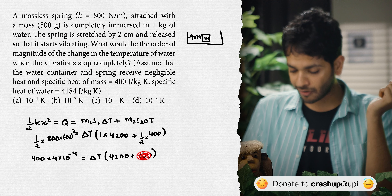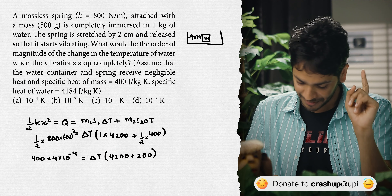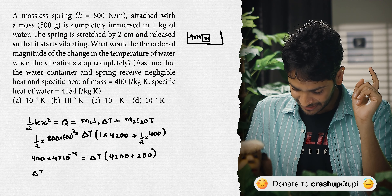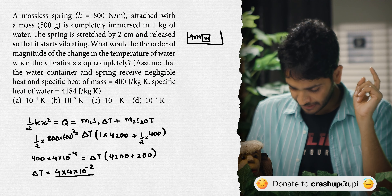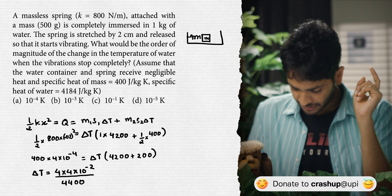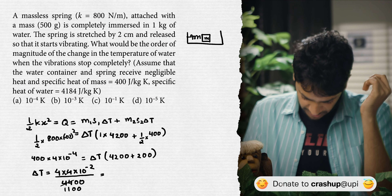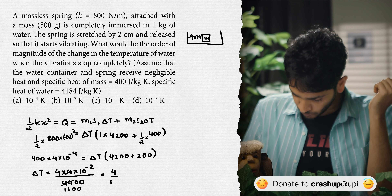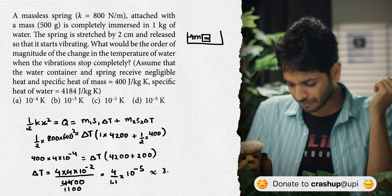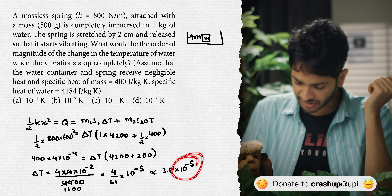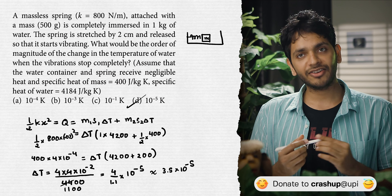Notice that the block's contribution is small compared to water's specific heat — but we won't ignore it. From the equation: ∆T = (4 × 4 × 10⁻²) / 4400, simplifying to 4 / (1.1 × 10⁻⁵) ≈ 3.5 × 10⁻⁵. The order of magnitude is 10⁻⁵. Option D is the correct answer.